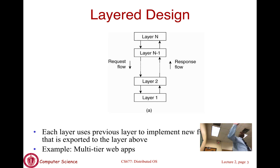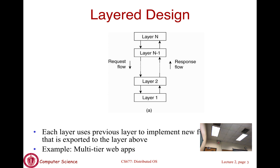Let's start with the first one which is the layered architecture. In this case your entire distributed application is split into a set of layers — N layers. The layers stack up and each layer can communicate with the layer above it and the layer below it. Layer i cannot communicate directly with layer i+2; it can only communicate with i+1 and i-1. That is a restriction of the layered approach.